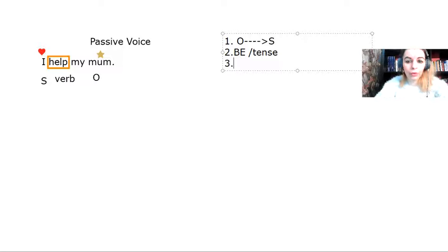The third thing that I have to do is actually turn the verb into past participle. And then what's next in case I want to mention who did the action?